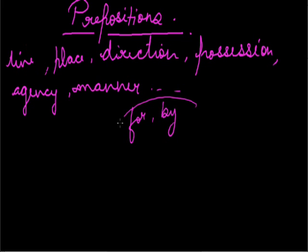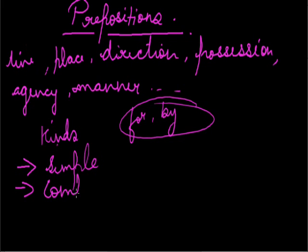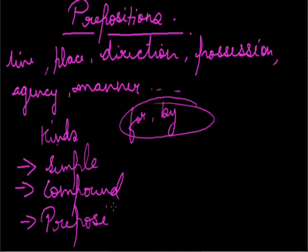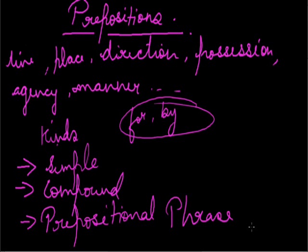Kinds of prepositions. There are four kinds of preposition: first, simple; second, compound; third, prepositional phrase; and fourth, participle preposition.